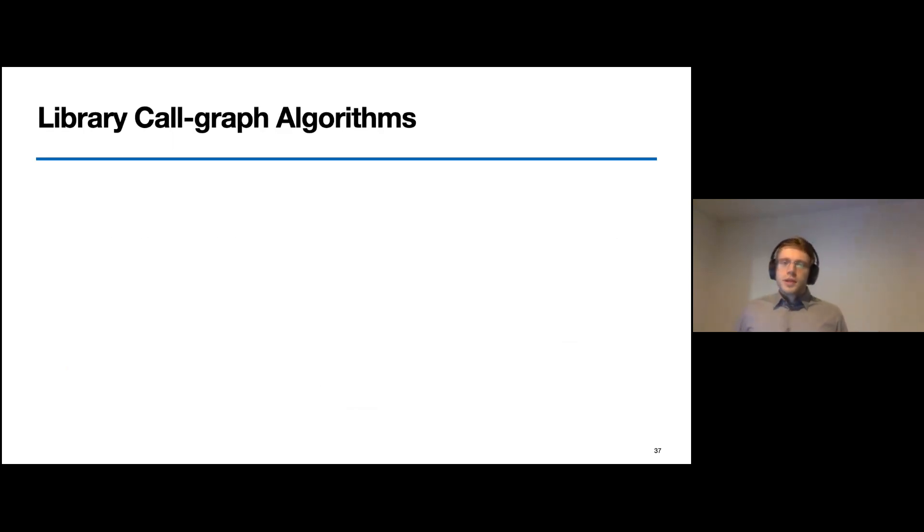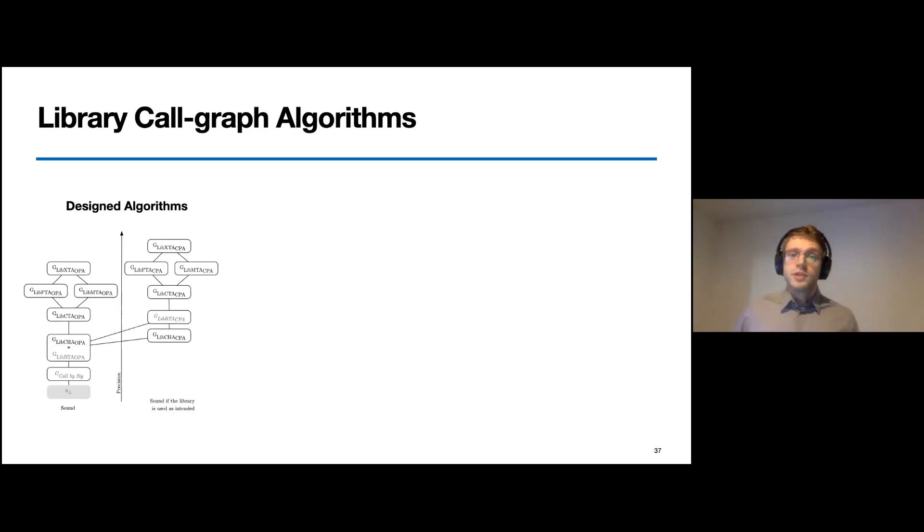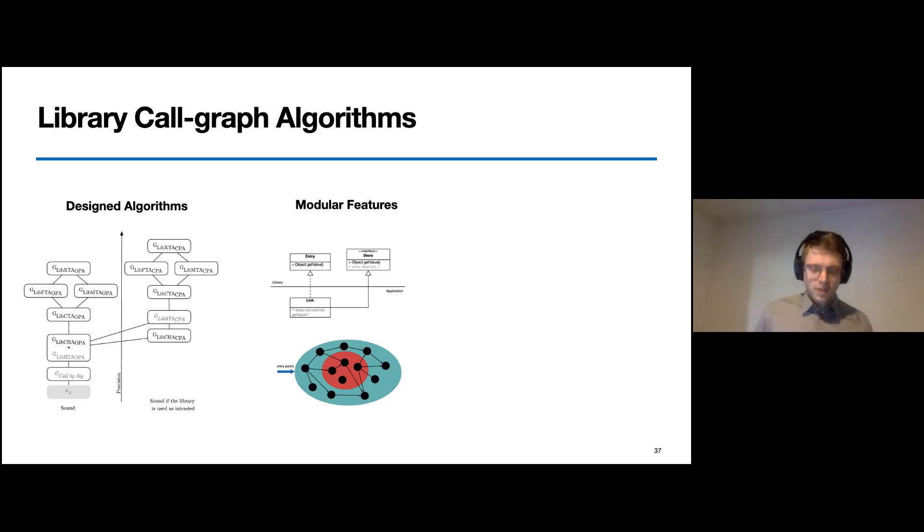So, using our new discoveries, we designed five call graph algorithms that either adhere to the open or closed package assumption. And besides, we also found new features for our modular call graph construction approach. On the one hand, we have to add, depending on the program we analyze, an analysis that computes the call graph's entry points accordingly. And on the other hand, when we analyze libraries, we need to add an analysis that resolves interface-based calls by signature in order to model possible extension scenarios. And finally, we used one of our call graphs in a case study on the JDK, where we also discovered over 600 unused methods which can potentially be removed.